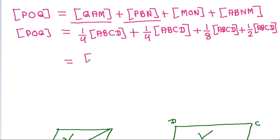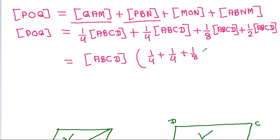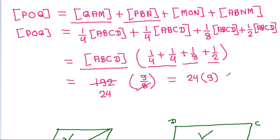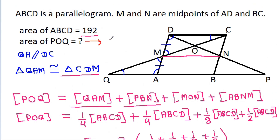So the total area of POQ equals area of ABCD times (1/4 + 1/4 + 1/8 + 1/2). Since area of ABCD is 192, and 1/4 + 1/4 = 1/2, plus 1/2 = 1, plus 1/8 gives 9/8. Therefore, area of POQ = 192 × 9/8 = 24 × 9 = 216.